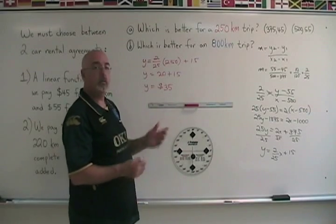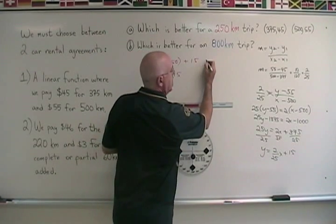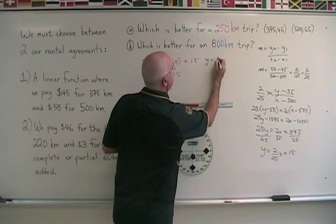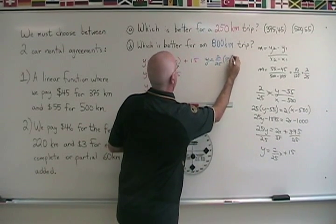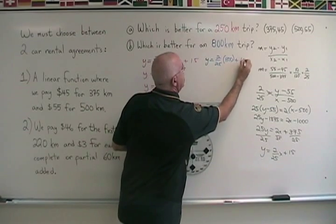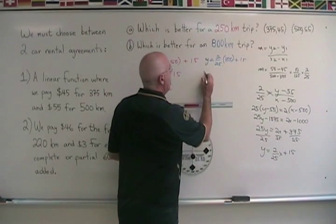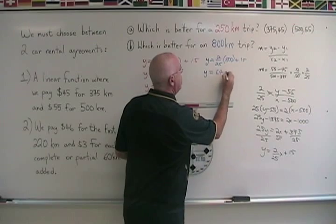Now let's try the 800 kilometer trip. We have y equals 2 over 25 times 800 plus 15. y is therefore equal to 64 plus 15.